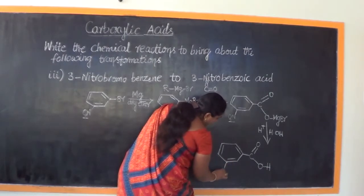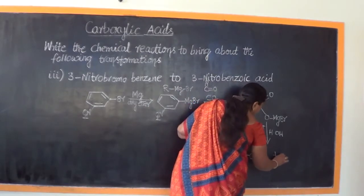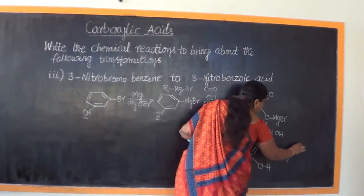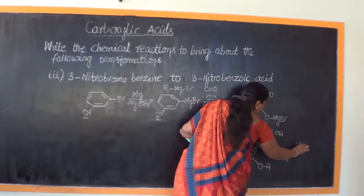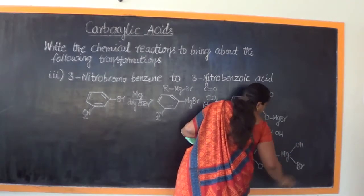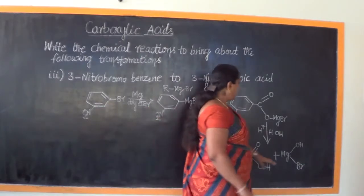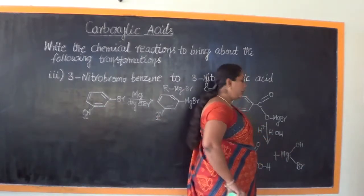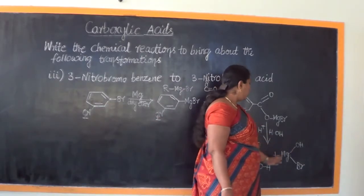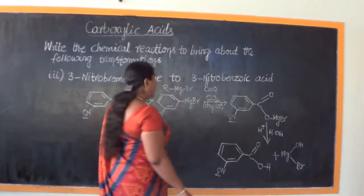This is the third carbon atom position, and the nitro group remains there. On one side, Mg is linked with OH, and on the other side with Br — forming bromohydroxymagnesium or hydroxymagnesium bromide as a byproduct.